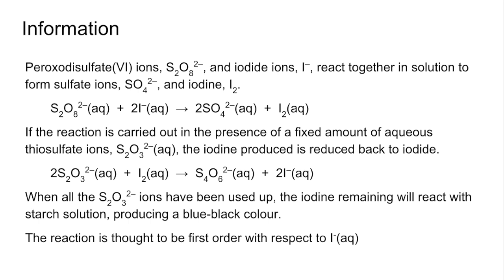Peroxodisulfate(VI) ions, S₂O₈²⁻, and iodide ions react together to form sulfate ions and iodine. We've got our first equation there and you can see I₂ is one of the products.